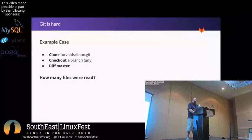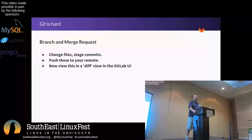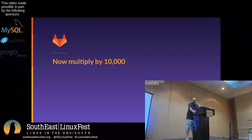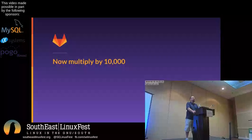That's already beginning to seem a little painful. Now let's go do all these changes, push those to our remote, and go look at it in a web browser — with ten of our friends, simultaneously. Scale's getting a little harder now. Now multiply that by 10,000. 100,000.